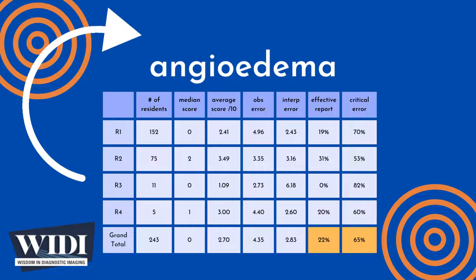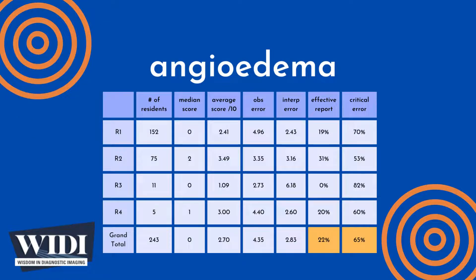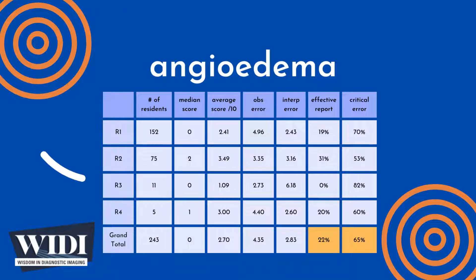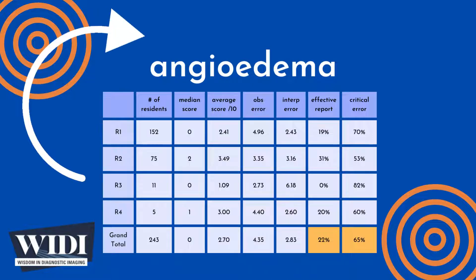We define a report having a critical error to be one with scores between 0 and 2. In terms of letter grades, this would be a D or an F. In this most missed case, 65% of residents produced reports with critical errors.